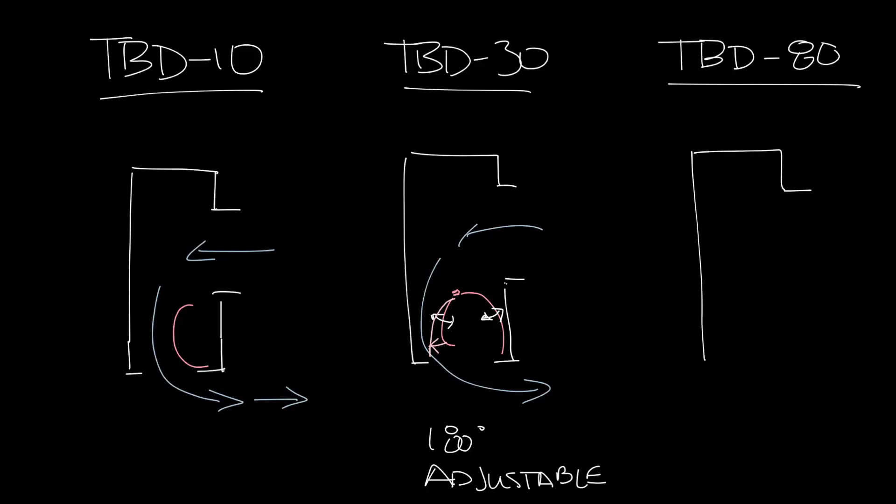The TBD-80 is somewhere in between performance-wise. It looks like this with the straight blade that has a gasket up here. The airflow would come in and go like this. This blade is adjustable. It pivots here to change your airflow pattern. It provides a 180 degree airflow pattern adjustment as well, but not the ability to damper the airflow like the TBD-30 does.